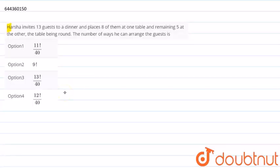today is: Harsha invites 13 guests to a dinner and places 8 of them at one table and the remaining 5 at the other table, both being round. The number of ways he can arrange the guests is, so